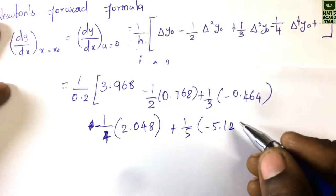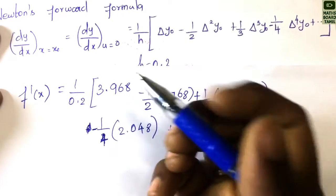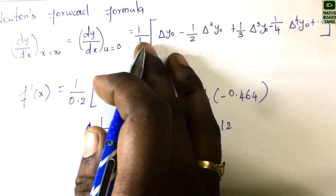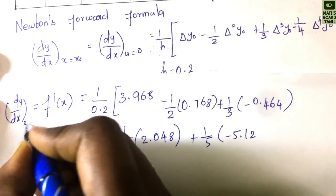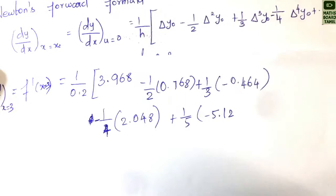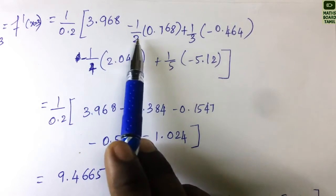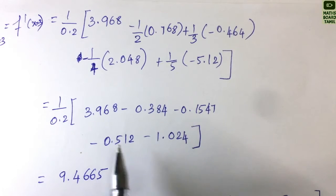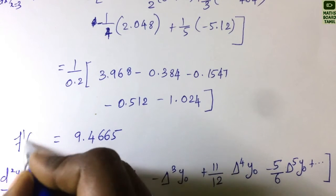Simplifying the first derivative: f'(x) at x = 3, that is dy/dx at x = 3. We multiply and divide through, and the final answer is f'(3) = 9.4665.